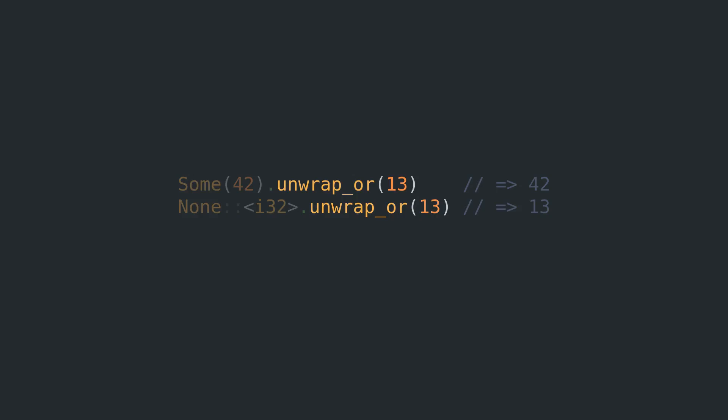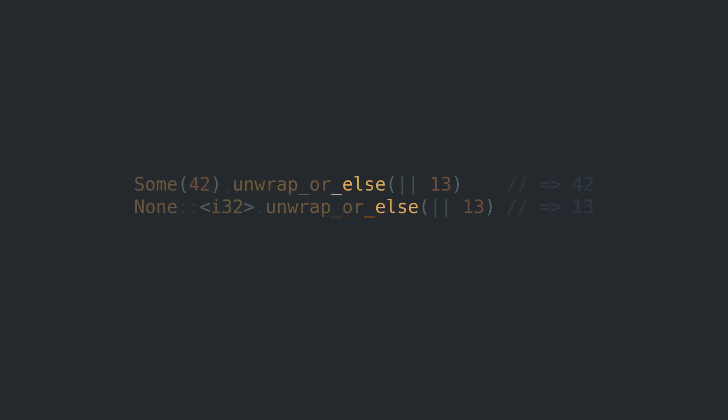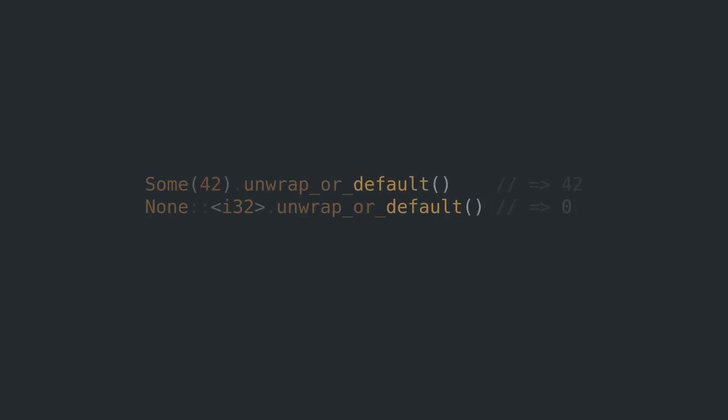Or unwrap_or_else, if you'd rather have a closure return the fallback value. Or, if you want to be lazy — and I know that's exactly what you want to do — you can rely on the default constructor of the wrapped type.